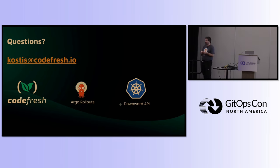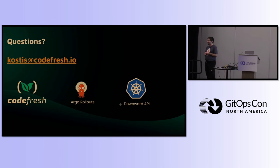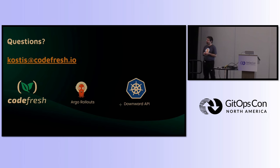We have three minutes for questions, but I'll also be at the booth outside. [Question about automated metrics-based promotion:] That's the next presentation I'm preparing. It shouldn't be too difficult if you already have metrics in place and have decided what a successful deployment means. The biggest problem is that people don't agree on what exactly a successful deployment is, or they don't have the metrics in place. If you're already there, this would be super easy to do.